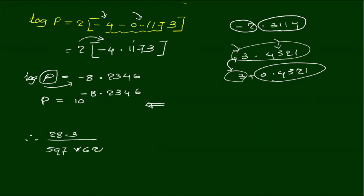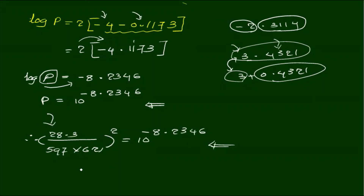The whole square is equal to 10 power minus 8.2346. Let's take a look at the same thing.